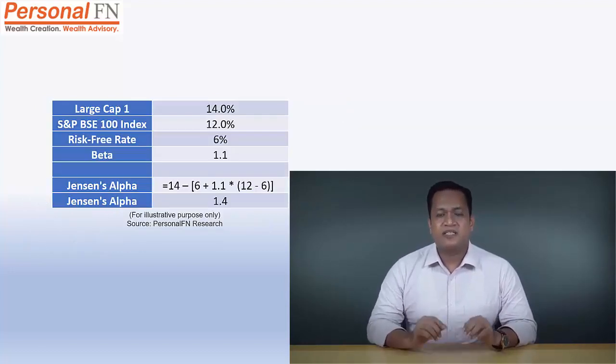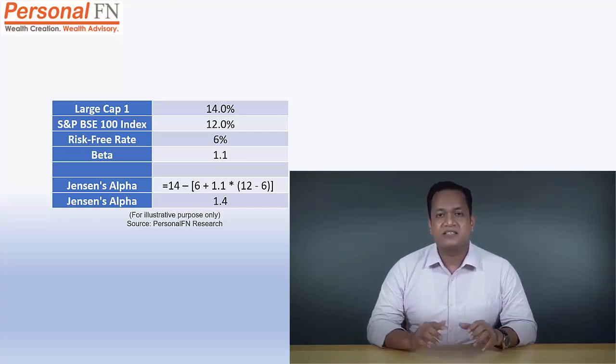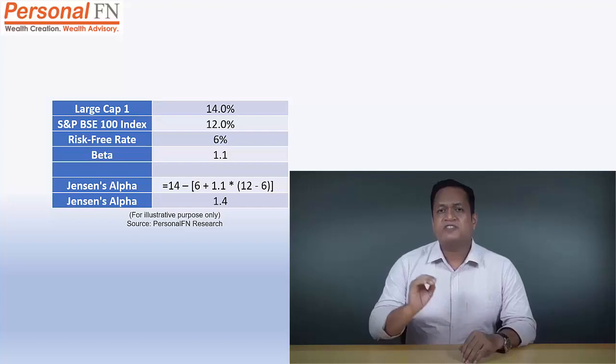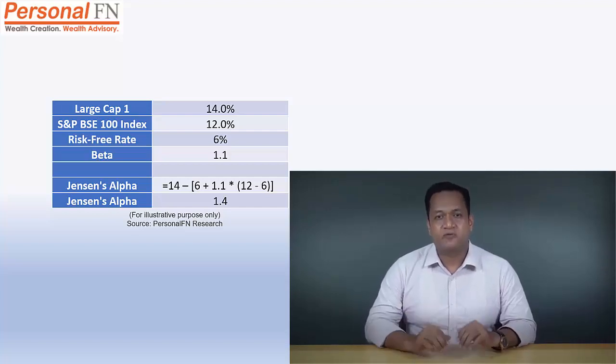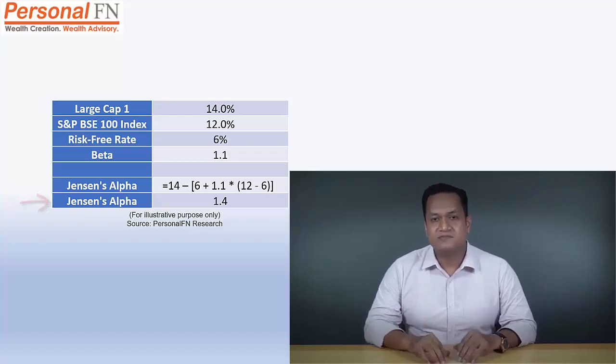Using this formula, let us assume a large-cap fund has generated a return of 14% in the last one year. Simultaneously, the benchmark S&P BSE 100 index returned 12%. The beta of the fund versus the BSE 100 index is 1.1 and the risk-free rate is 6%. Thus, in this case, Jensen's alpha will be 1.4% if calculated using the given formula. Apart from other important ratios like the Sharpe, Sortino, and Treynor, Jensen's alpha is also an important ratio considered by mutual fund analysts to analyze which funds are worth recommending to investors. The higher the alpha value, the more rewarding the option is.